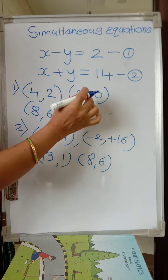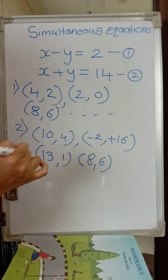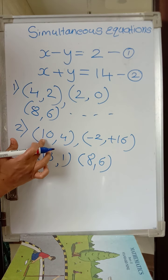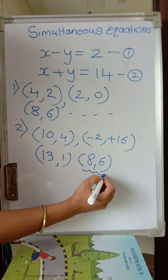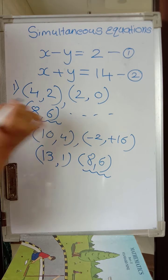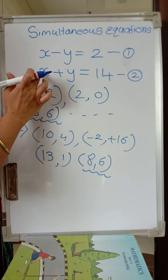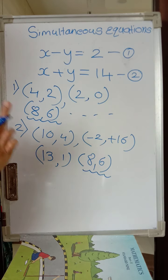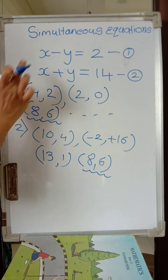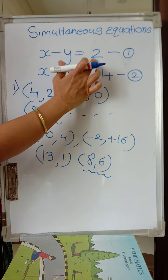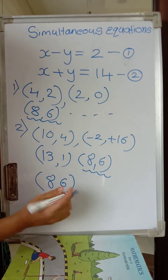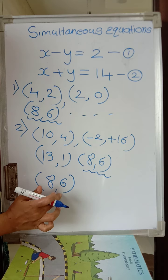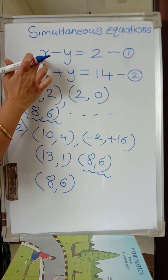Now carefully observe: from equation 1 we have pairs like 4 comma 2, 2 comma 0, and 8 comma 6. From equation 2 we have 10 comma 4, minus 2 comma plus 16, 13 comma 1, and 8 comma 6. The value 8 comma 6 is common in both. So these two equations are satisfied by the same unique solution — 8 comma 6.